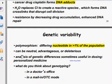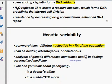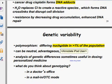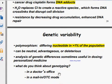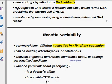Genetic variability — polymorphism is a differing nucleotide present in greater than 1% of the population. It can be neutral, advantageous, or deleterious. Analysis of genetic differences is useful in dosing personalized medicine, as some people can clear a drug faster than others depending on their body. One major example is sickle cell anemia, common among African American populations. It is genetically advantageous as it prevents malaria, but disadvantageous as it can cause platelet blocking and eventually lead to heart issues. That covers DNA replication, recombination, and repair.